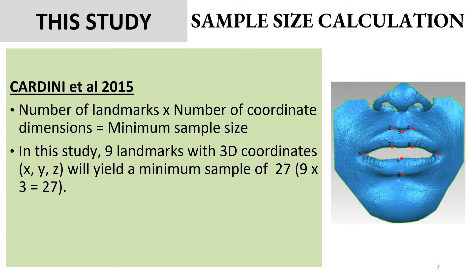Moving on to sample size calculation. In geometric morphometric analysis, Cardini et al. in 2015 introduced a method to calculate sample size. The number of landmarks were multiplied together with the number of coordinates to yield a minimal sample size. In this study, nine landmarks were used in the lips. Multiplying into 3D coordinates, which gives us X, Y, and Z, yields a minimum sample size of 27.